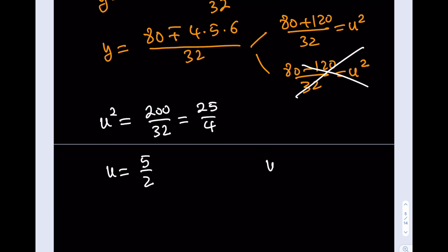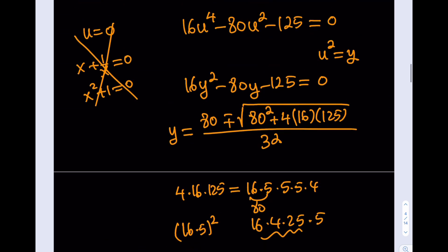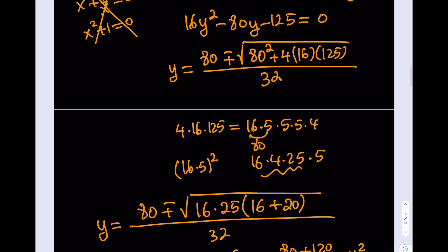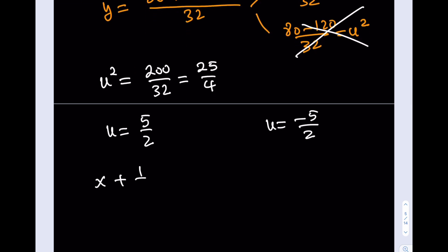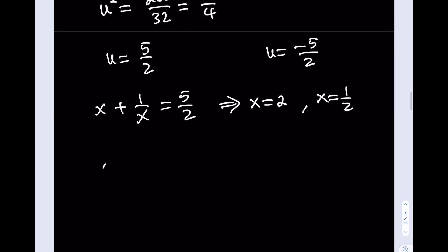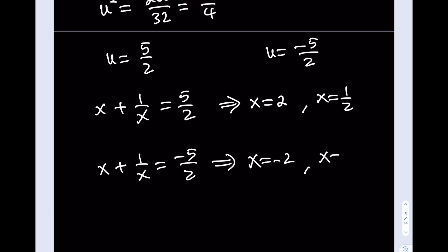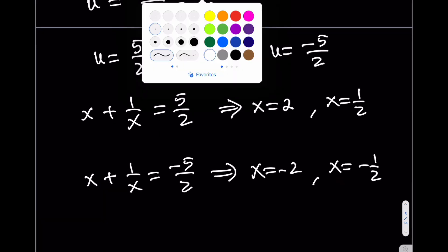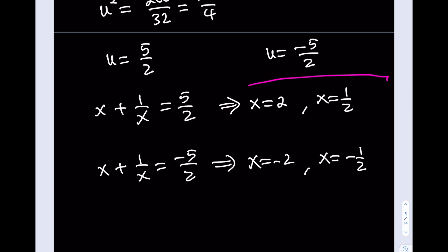Since u equals x plus 1 over x, back-substituting gives x plus 1 over x equals 5 halves, which yields x equals 2 or x equals 1 half. And if x plus 1 over x equals negative 5 halves, everything is negated, giving x equals negative 2 or x equals negative 1 half. So the four real solutions are x equals 2, 1 half, negative 2, and negative 1 half. That's it for this video.